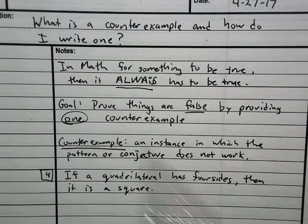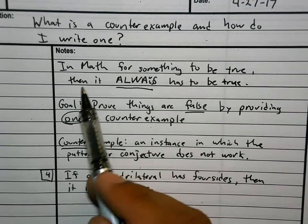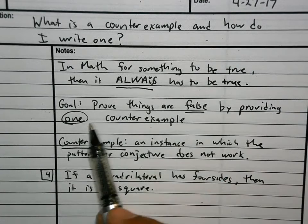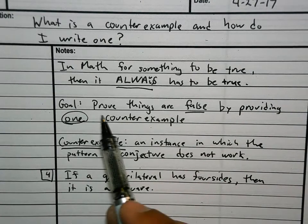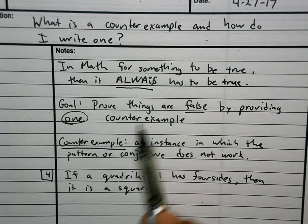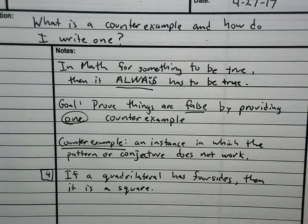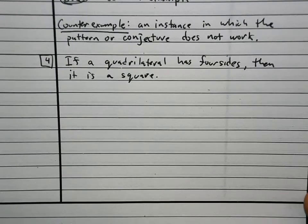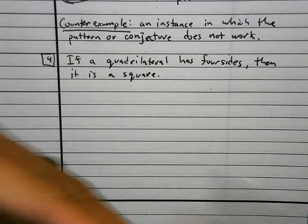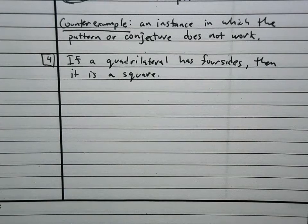Now, what I started you with was this statement. In math, for something to be true, then it always has to be true. And what we're going to be doing is we're going to be proving things are false by providing one example that shows that this is not true. If a quadrilateral has 4 sides, then it is square. This is not always true. This is false.